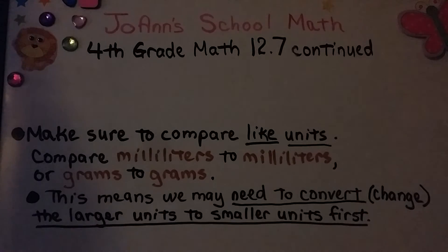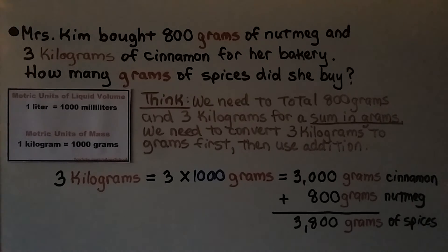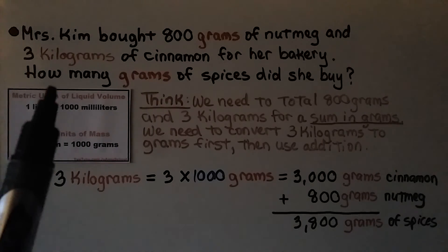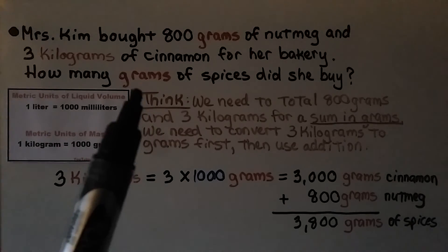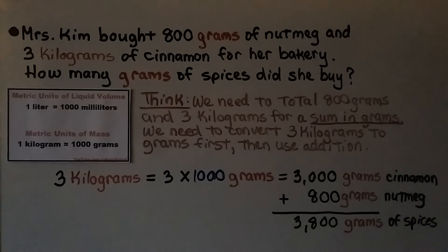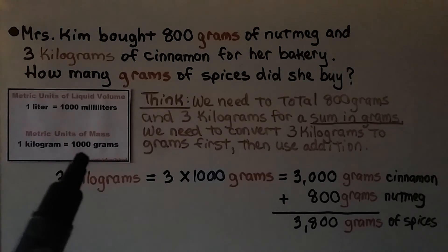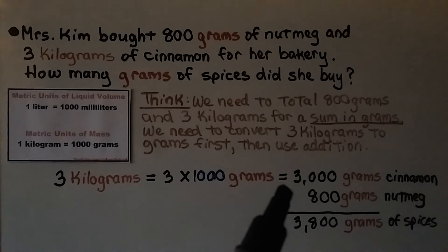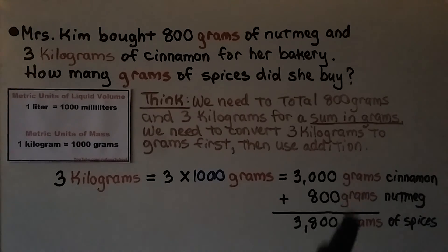Remember to compare like units — milliliters to milliliters or grams to grams — which means converting the larger units into smaller units first. For example, Mrs. Kim bought 800 grams of nutmeg and 3 kilograms of cinnamon. We convert 3 kilograms to 3,000 grams, then add: 3,000 plus 800 equals 3,800 grams of spices total.